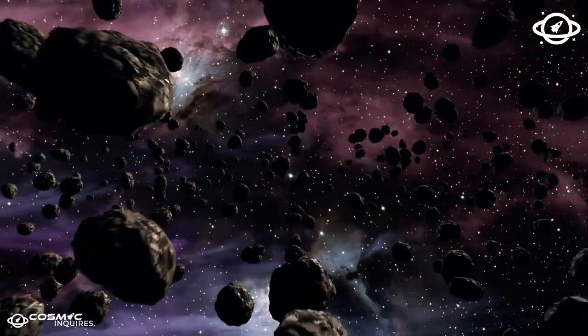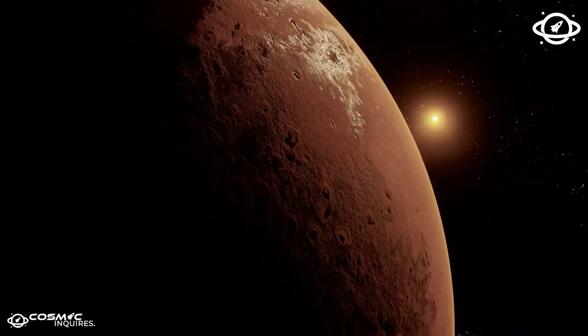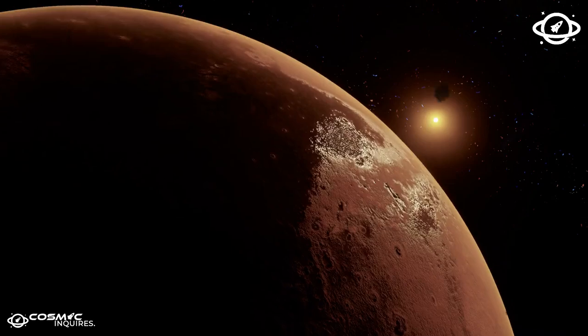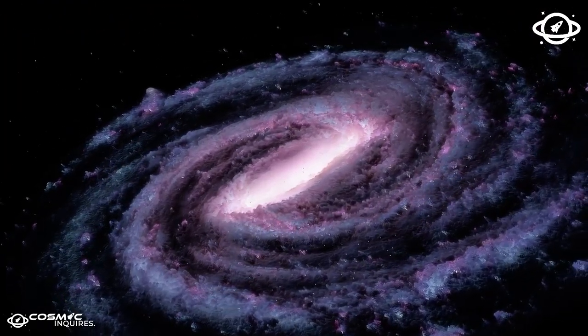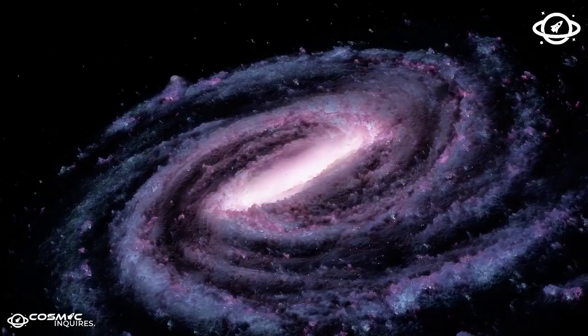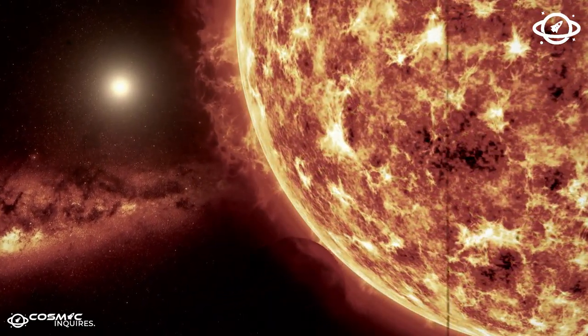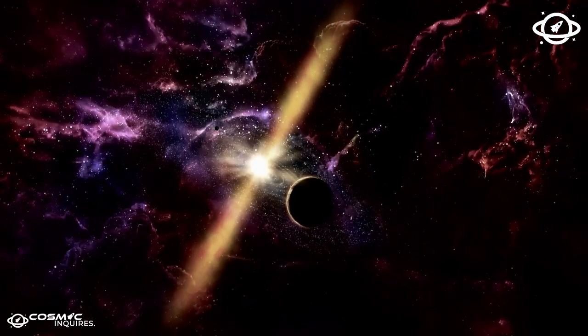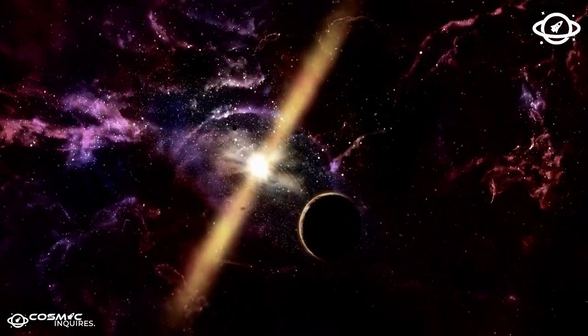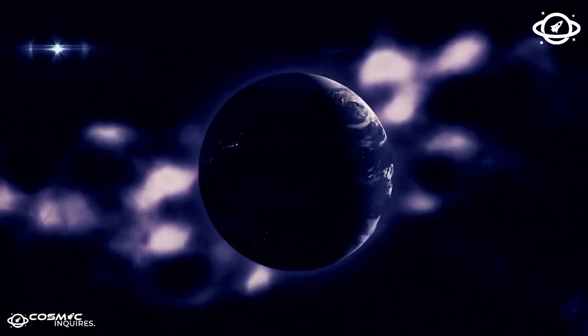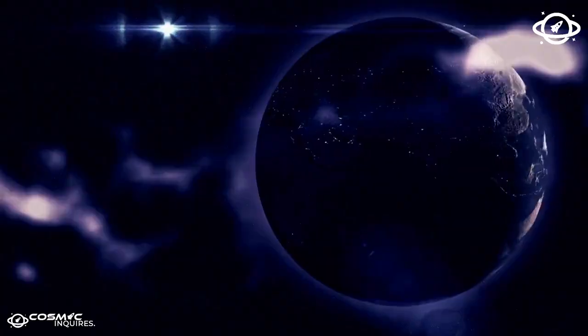In 2011, the US government made a bold move to block China's progress in space. The Wolf Amendment barred NASA from working with China, fearing that collaboration would allow Beijing to exploit American rocket technology. The US didn't want China piggybacking off its advancements, nor did it want to risk China reaching key milestones like the moon or Mars first. But the ban didn't slow China down, and if anything, it pushed them to accelerate their plans.